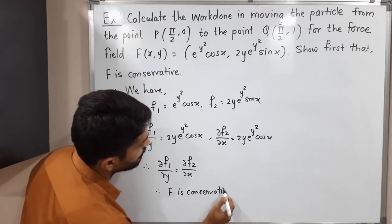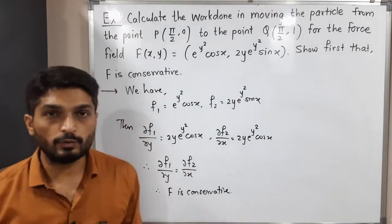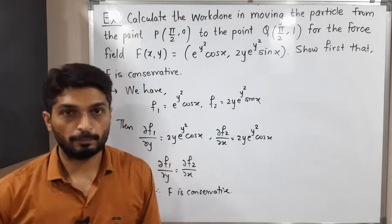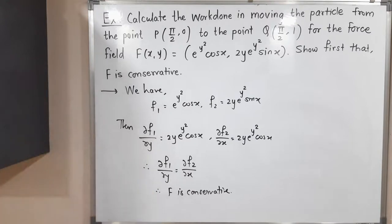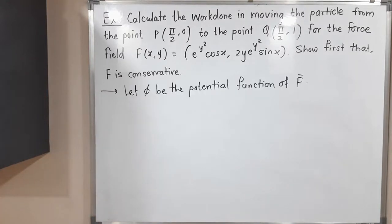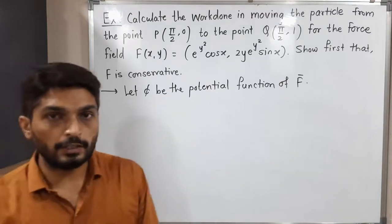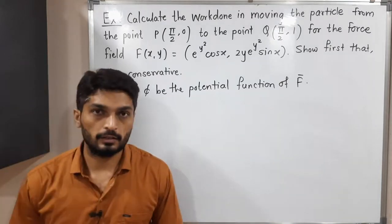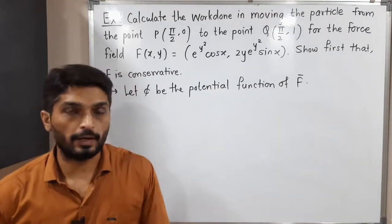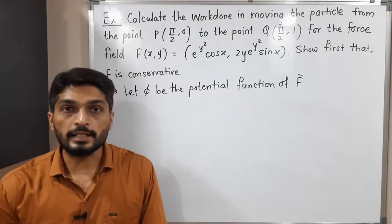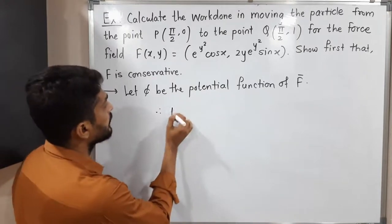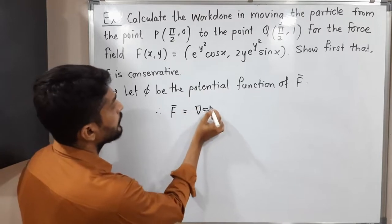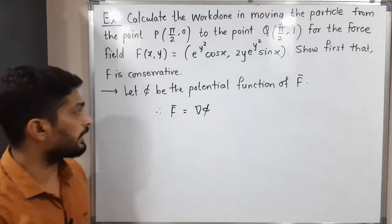In this way, we proved the field is conservative. Now we have to find its potential function. Let φ be a potential function of the given field F bar. If φ is a potential function of F bar, we can write F bar is equal to ∇φ. Let us put the values.